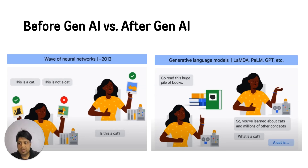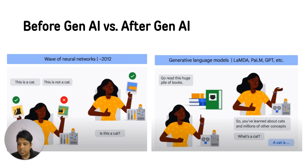If we compare the scenario before Generative AI and after Generative AI — before Generative AI, if we wanted a model to predict whether an image is of a cat or not, we had to train the model with thousands of cat images and thousands of non-cat images. Based on those images, models would identify a pattern and then classify the image.